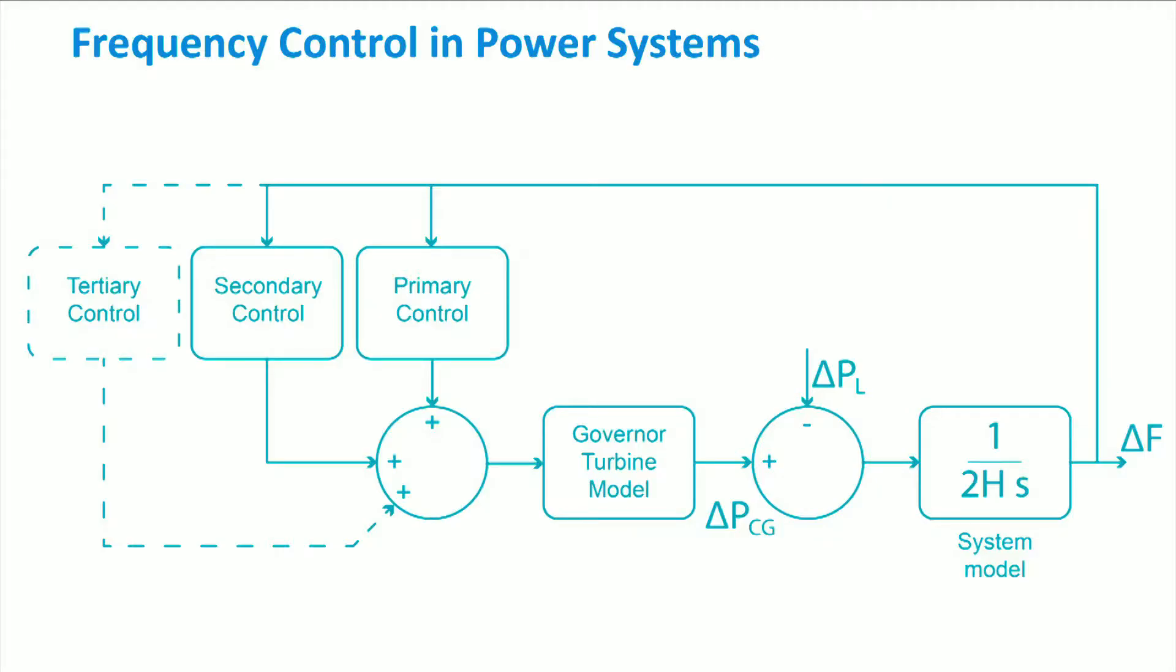An active power balance exists when the power generation is equal to the power consumption in the network. The figure shows the hierarchical active power control scheme in conventional power systems, where we find primary, secondary and tertiary control.